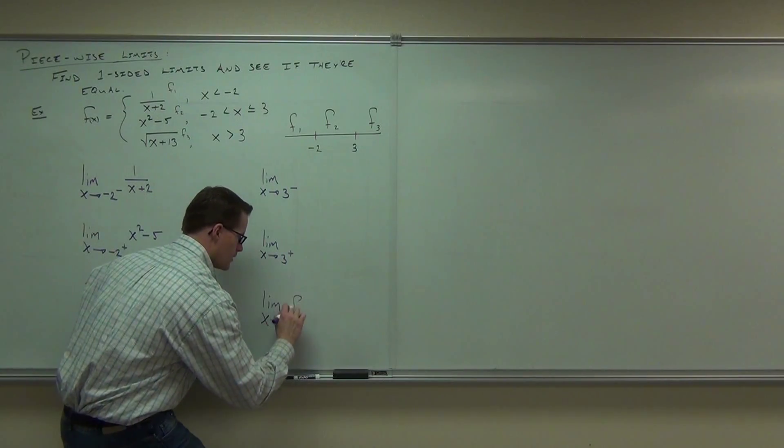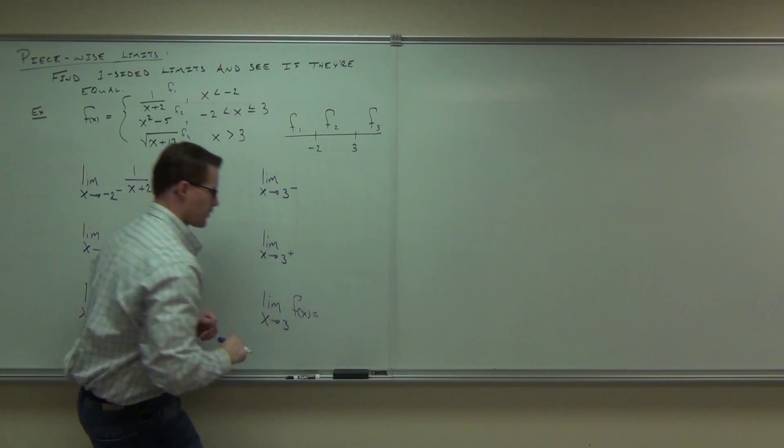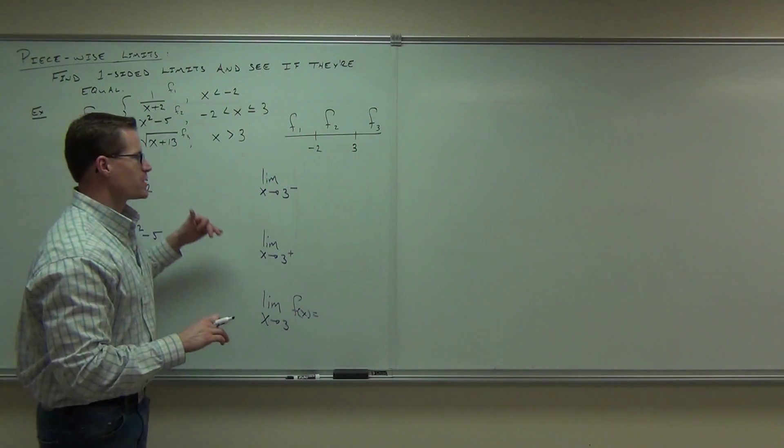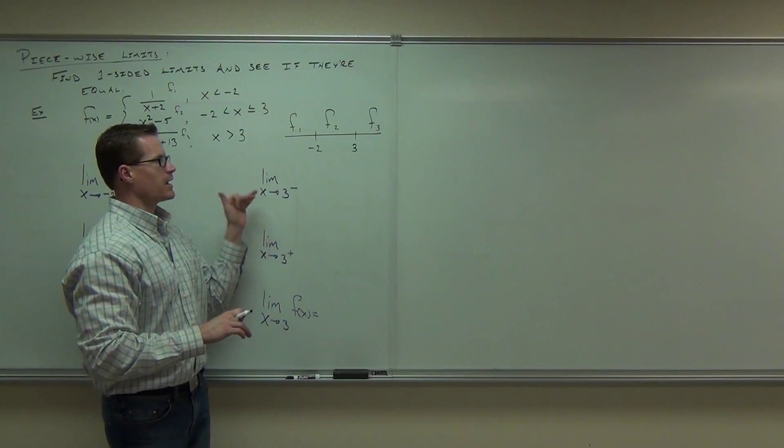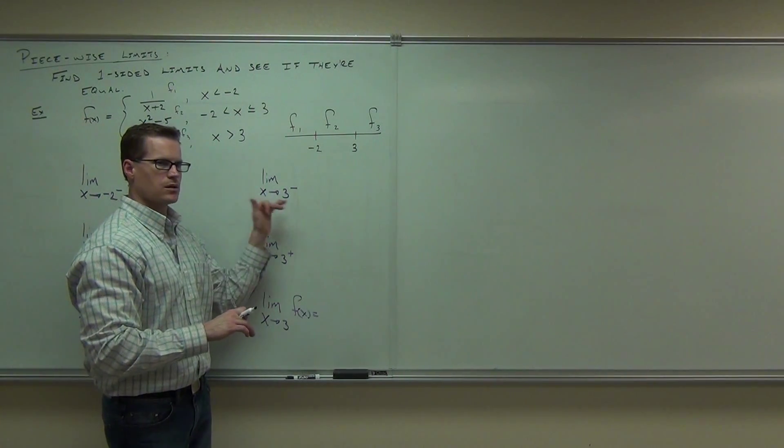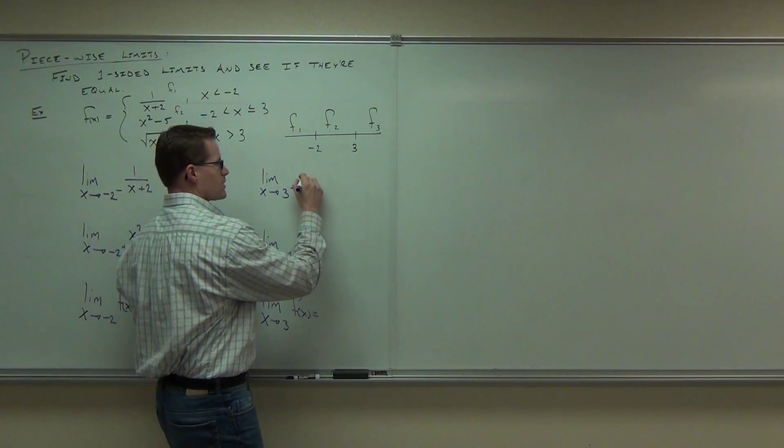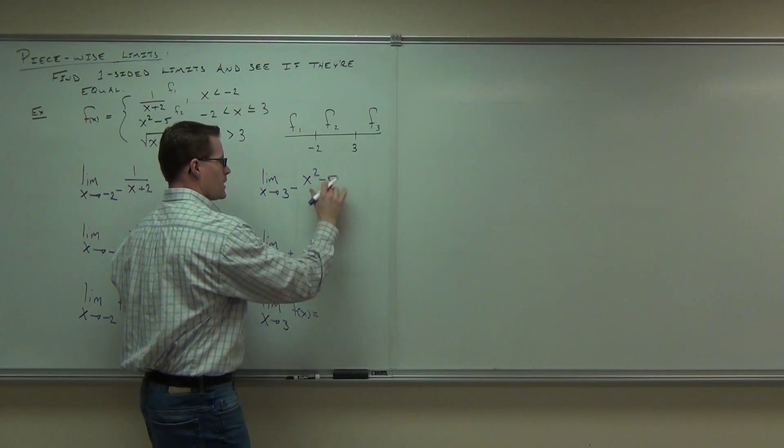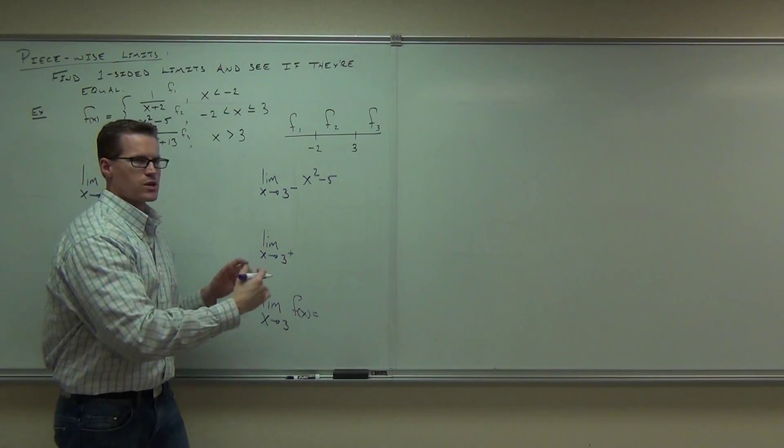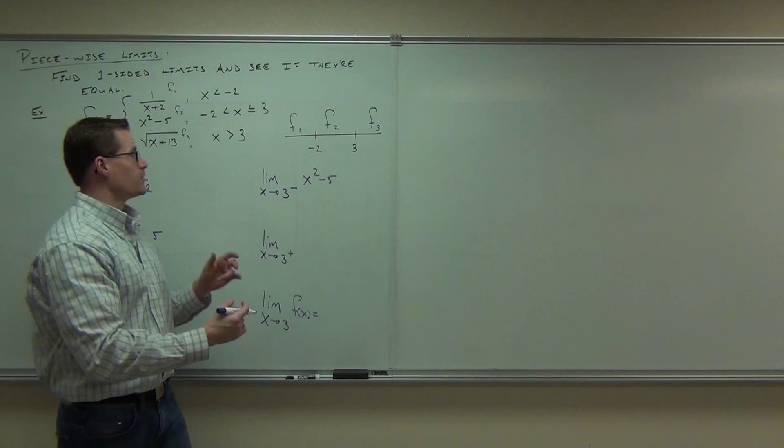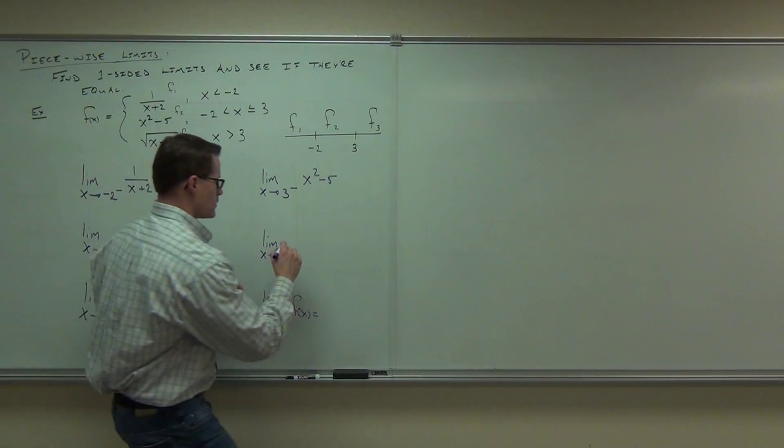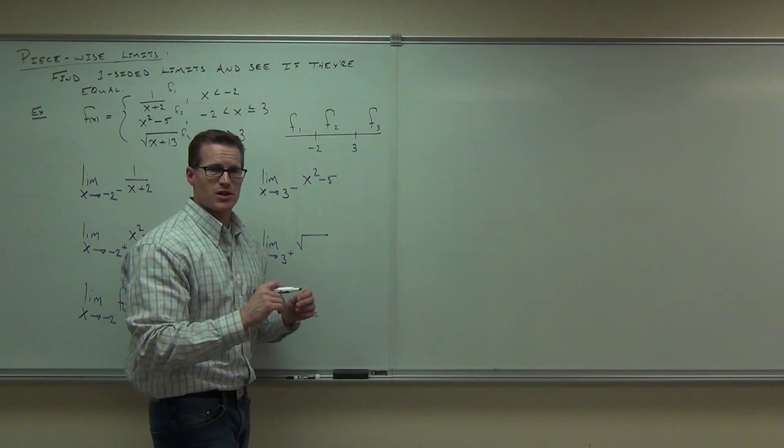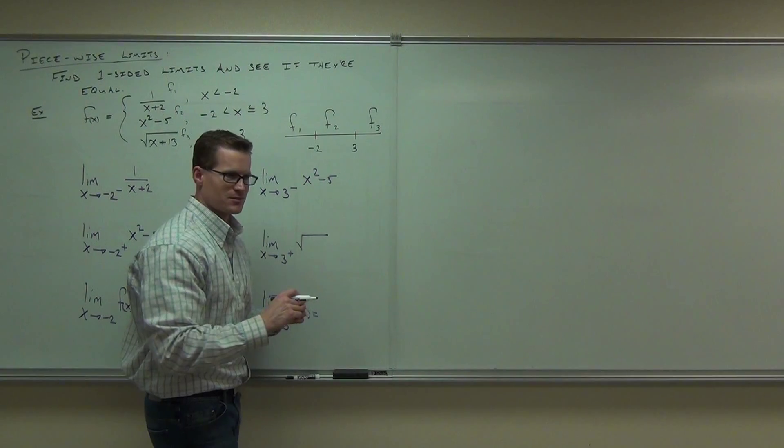We'll have a limit at 3. Let's fill out the functions. As we approach 3 from the left-hand side, which function are we using? Function 2, again, you said that was x squared minus 5. How about from the right-hand side, what function are we using? Function 3. What's function 3? I'm assuming your mumbling was square root of x plus 13.